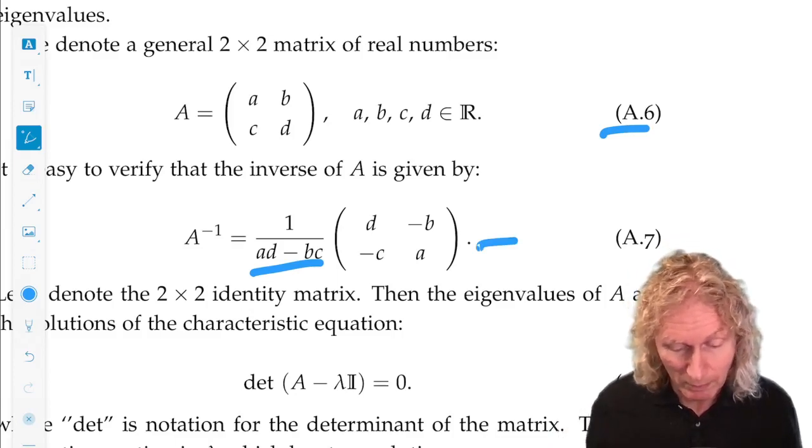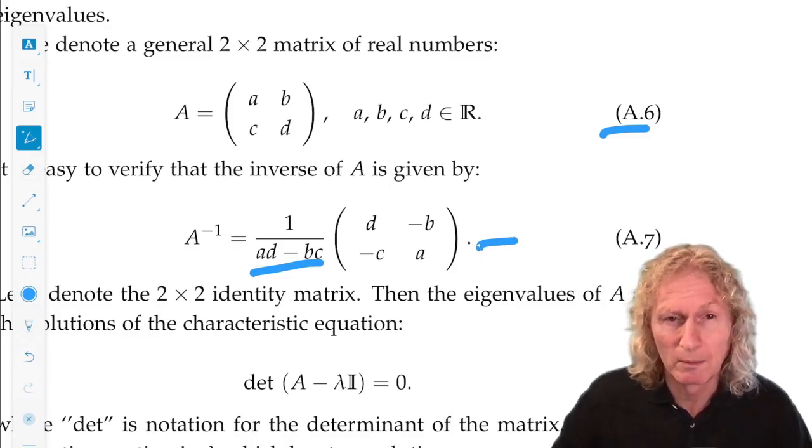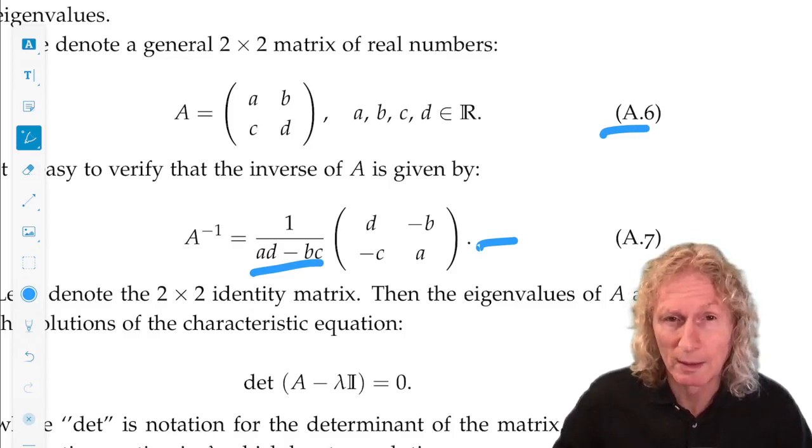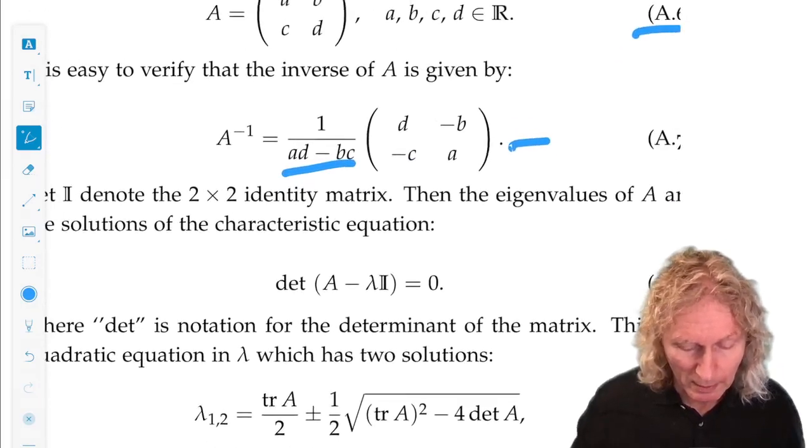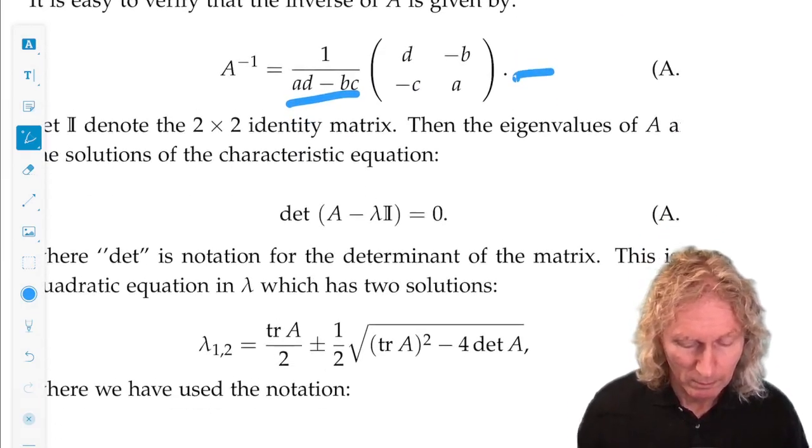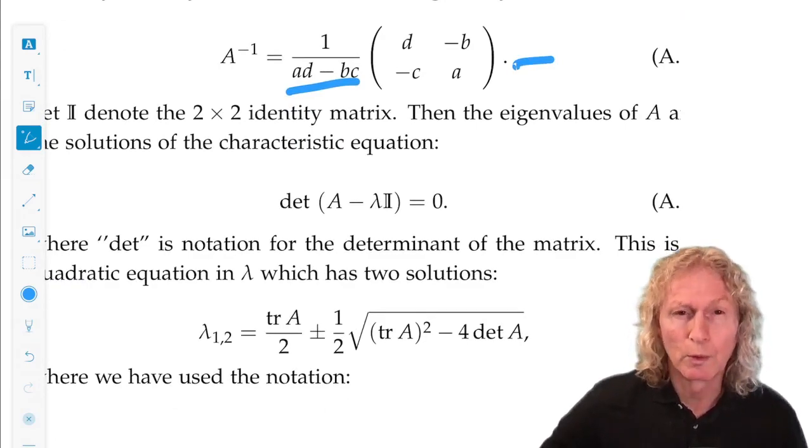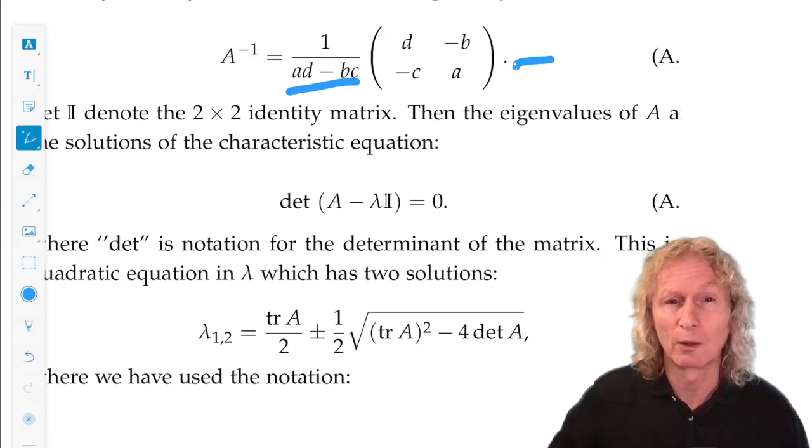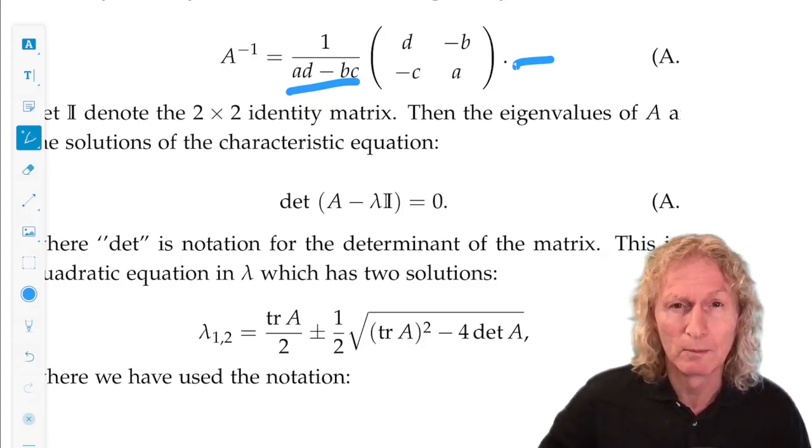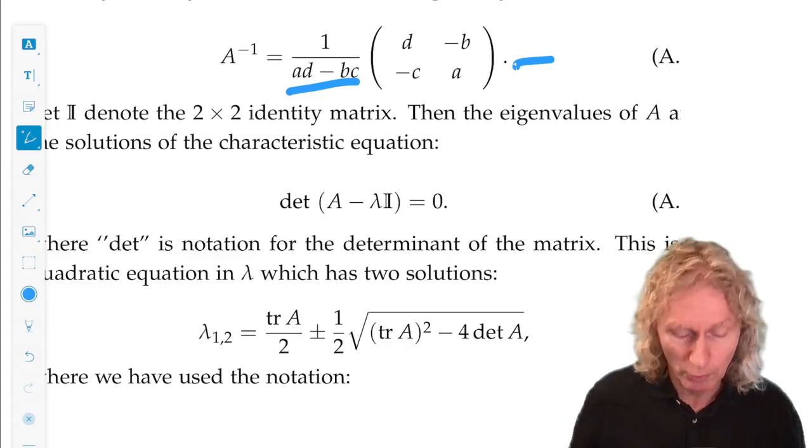You can check this, multiply A by A inverse, and see that you do get the identity matrix. Now, to find eigenvalues of A, we do the usual thing. Determinant of A minus lambda times the identity matrix equals zero. We'll get a quadratic equation to solve. It'll have two roots.